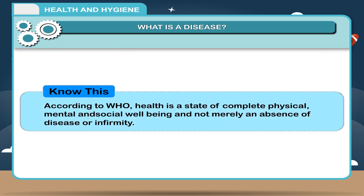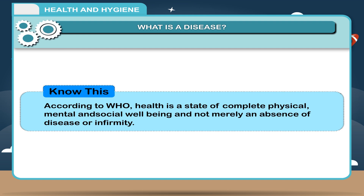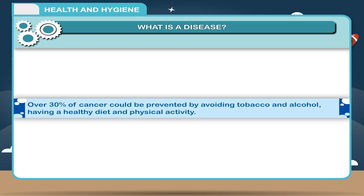Know this: According to WHO, health is a state of complete physical, mental and social well-being and not merely an absence of disease or infirmity. Over 30% of cancer could be prevented by avoiding tobacco and alcohol, having a healthy diet and physical activity.